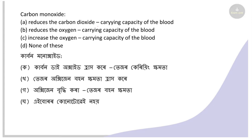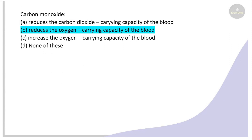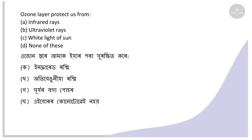Next: Carbon monoxide does what to blood? Options: reduces carbon dioxide carrying capacity, reduces oxygen carrying capacity, increases oxygen carrying capacity, none of these. The right answer is it reduces the oxygen carrying capacity of blood. Carbon monoxide reduces the blood's ability to carry oxygen.